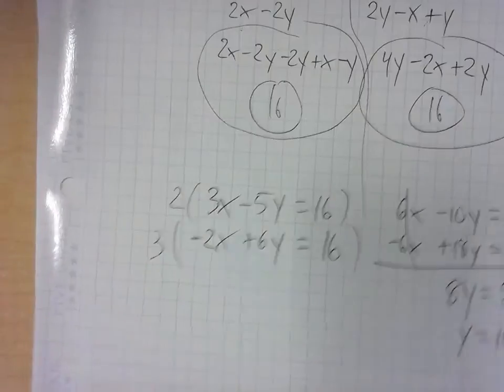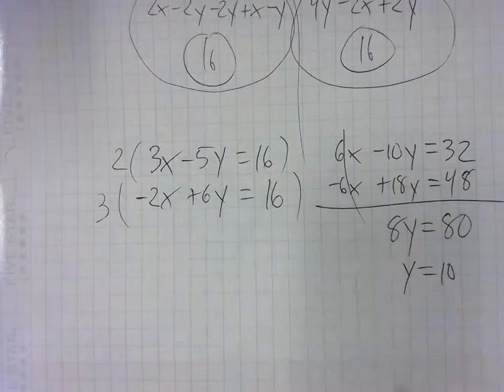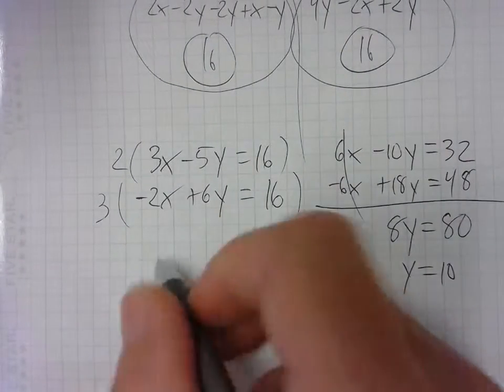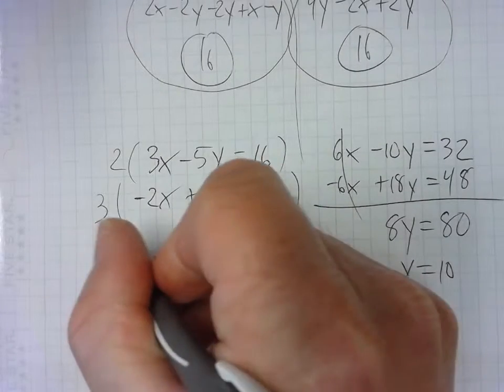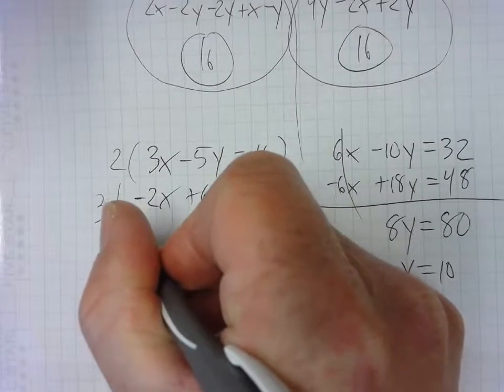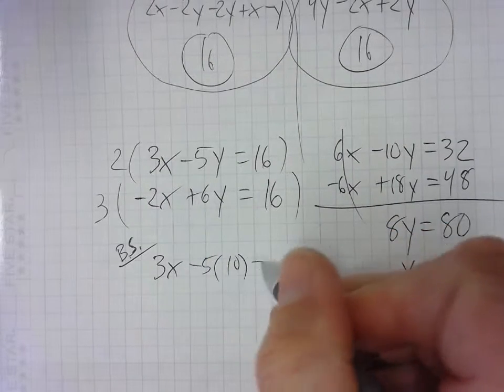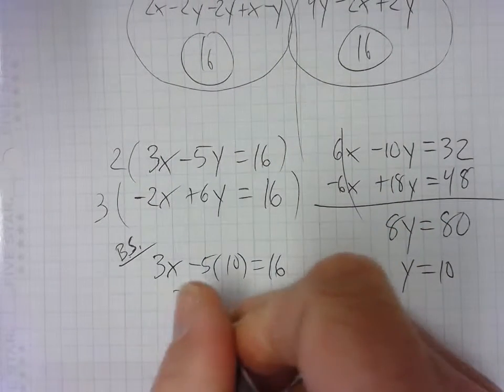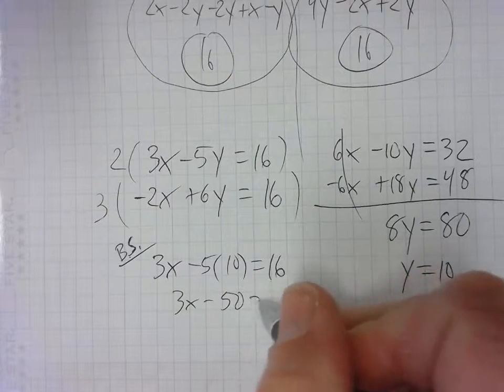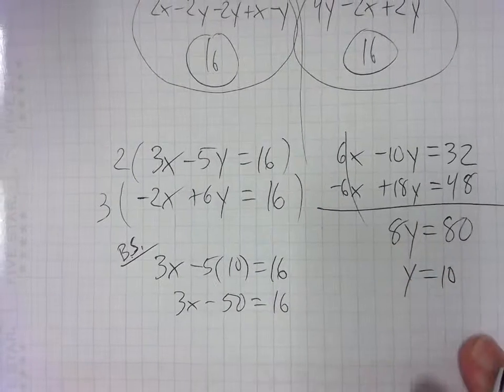All right. Now back substituting. So I'm going to put the 10 back into the equation. I'll put it in the first equation. So 3X. I call this the back substitution step. Back substitution BS minus 5 times 10 is equal to 60. 3X minus 50 is equal to 16. Add over